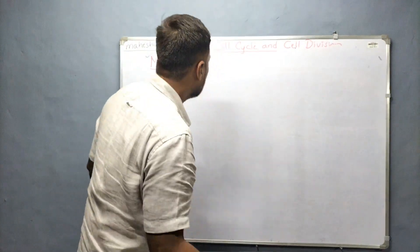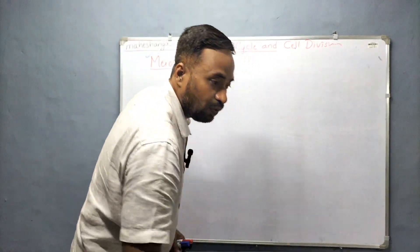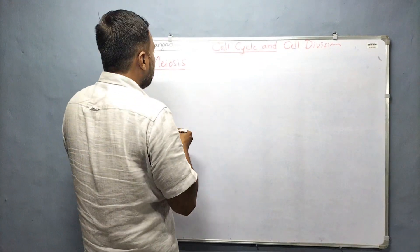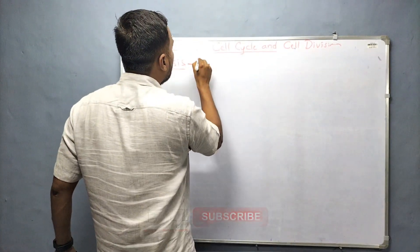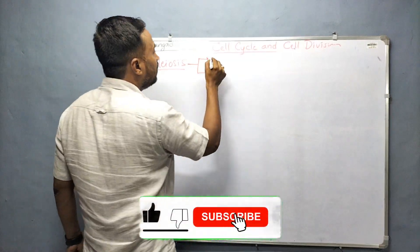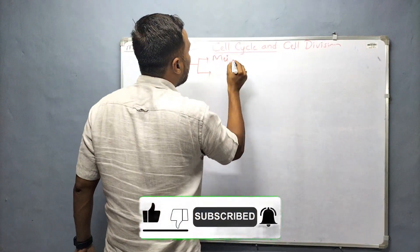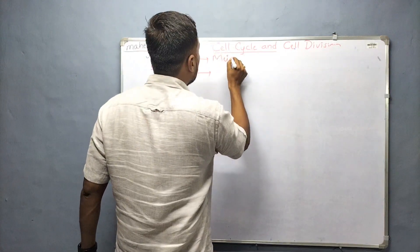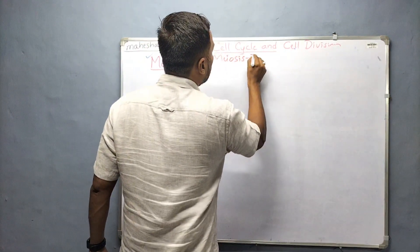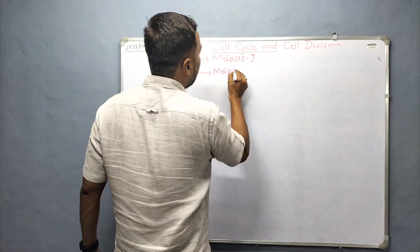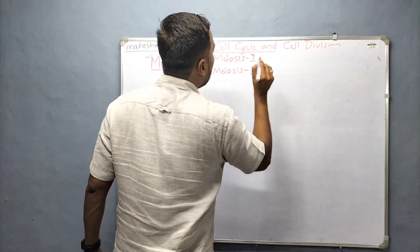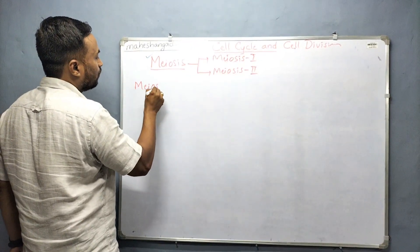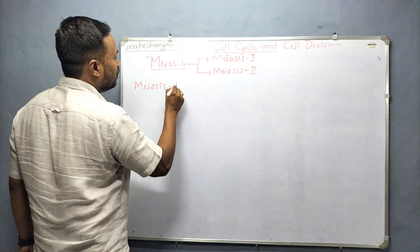This is going to be very very important, so please watch till the end. Meiosis is further divided into two cycles of nuclear division and cell division, which are known as meiosis one and meiosis two. So let's first talk about meiosis one.